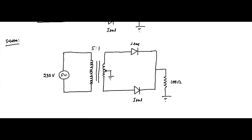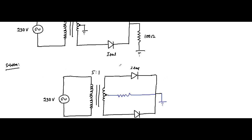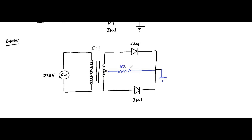Don't get confused with this circuit diagram — if you draw it in this way, it is also correct. This is the same thing. The load resistance always has one end connected to the center tap point and the other end connected to ground. We have two ideal diodes with zero resistance and a 230 volt supply voltage as the RMS value.